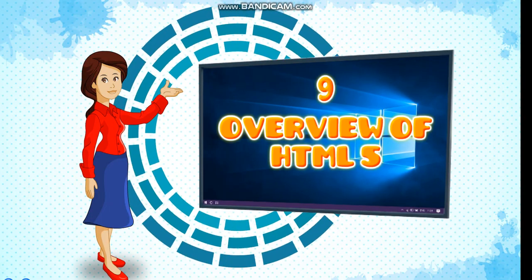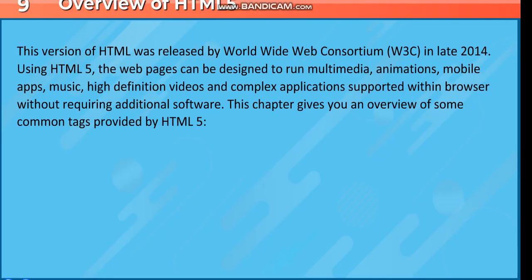Chapter 9: Overview of HTML5. This version of HTML was released by the World Wide Web Consortium (W3C) in late 2014. Using HTML5, web pages can be designed to run multimedia, animations, mobile apps, music, high-definition videos, and complex applications supported within the browser without requiring additional software. This chapter gives an overview of some common tags provided by HTML5.